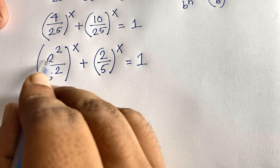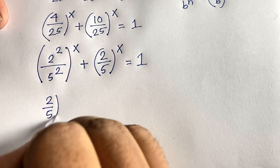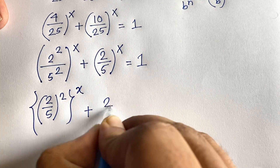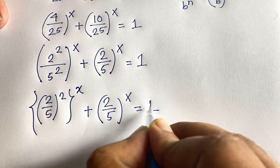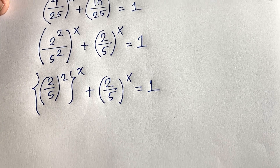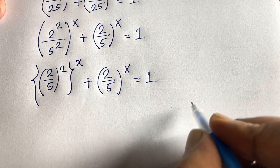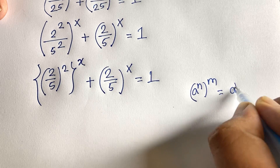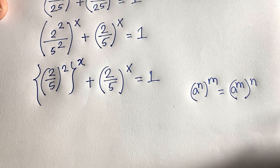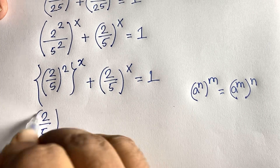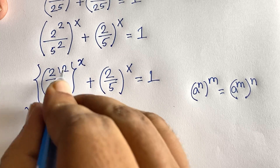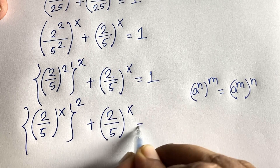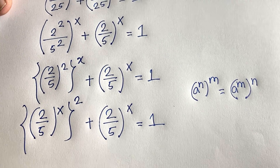We can write (2/5)^(2x) as ((2/5)^x)^2 using the rule (a^m)^n = a^(mn). So the equation becomes (2/5)^(2x) + (2/5)^x = 1. Notice that both terms share the same base expression (2/5)^x.